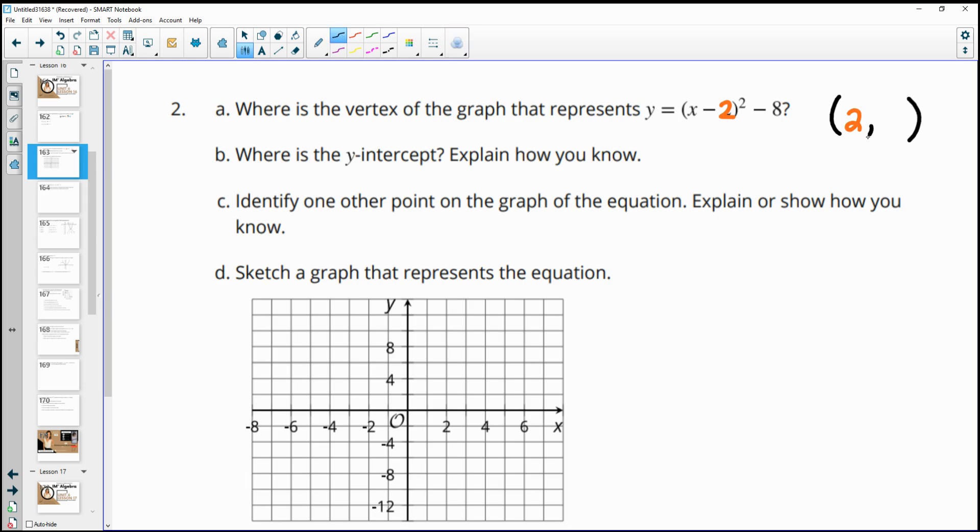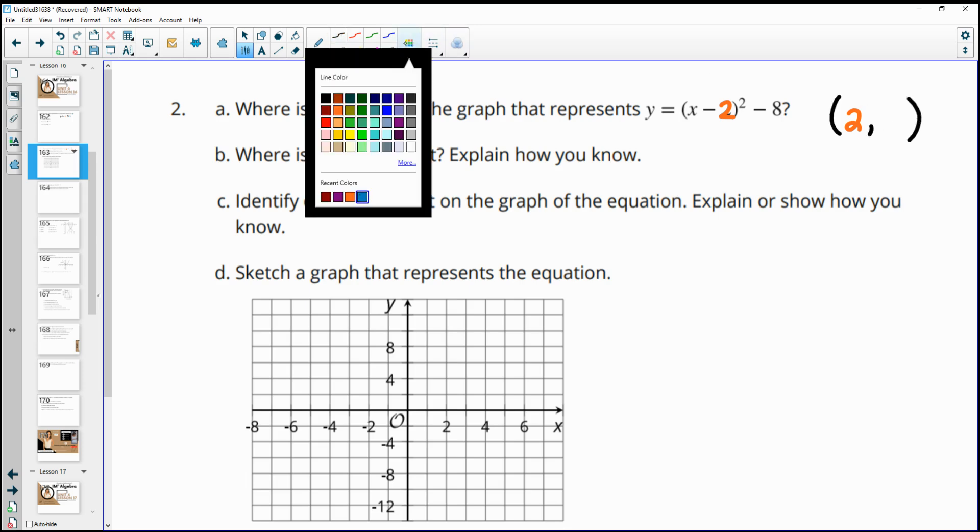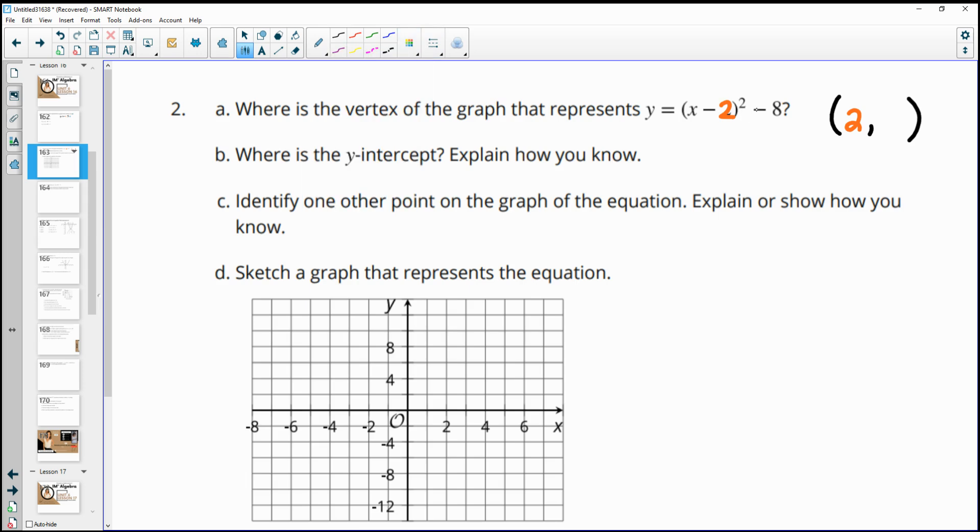And then our y value is outside of that function or outside of the parentheses. And the same as what it looks like. So then we have a negative 8 for our y value. So our vertex is (2, -8).